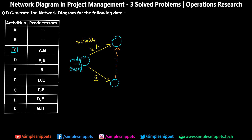You don't have to name the dummy activity, but it denotes that A and B meet at this event. Now I can start C from here, and C will reach a new event. Moving on to activity D — for D also A and B are required, so D starts from this same node. Multiple activities can start from one node, but two activities starting from the same node cannot go directly to the same other node — that's why the dummy was required.